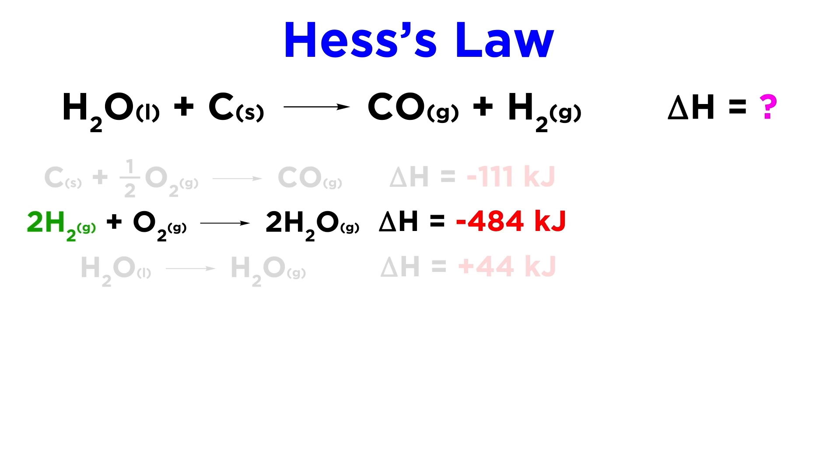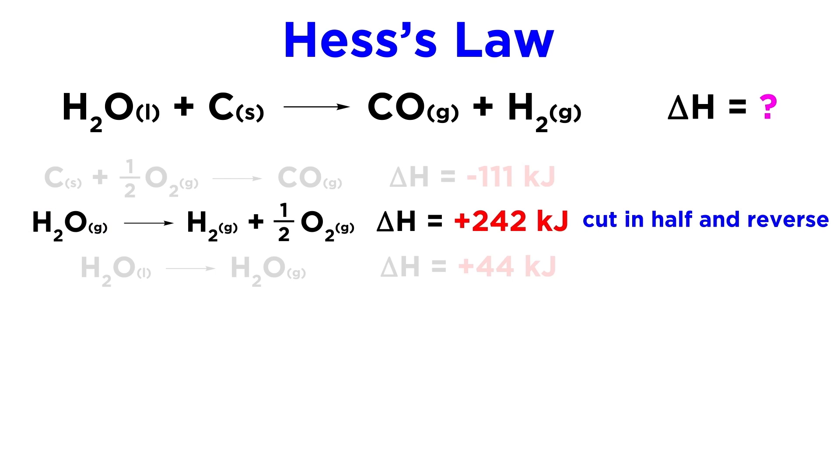Now the second equation has hydrogen gas, but it has two of them, and it has it on the wrong side. We need it as a product, so let's cut it in half and reverse it, giving us this. And we must do the same to the delta H, which will now be half the original value, and positive.